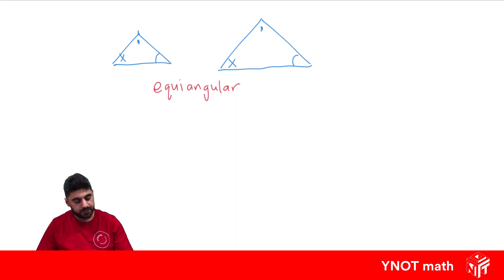Once you prove that two angles are equal, automatically the third angle has to be equal, because we know the angle sum of the triangle is 180 degrees. So to prove that two triangles are equiangular, you only need to prove two angles are equal, not three.